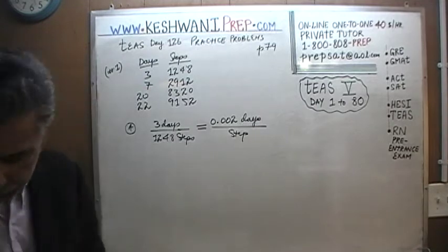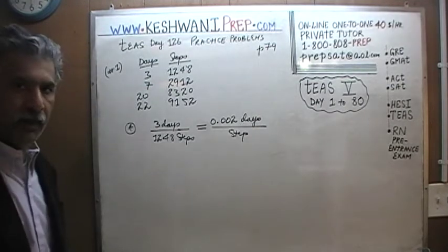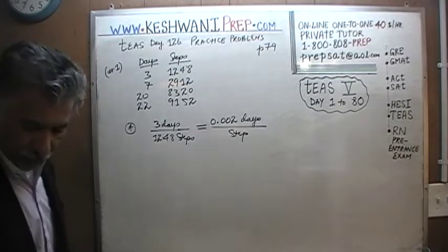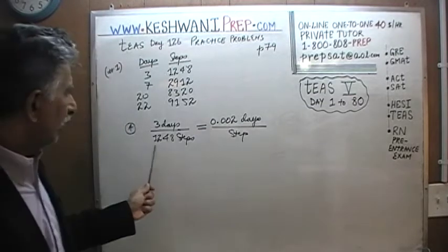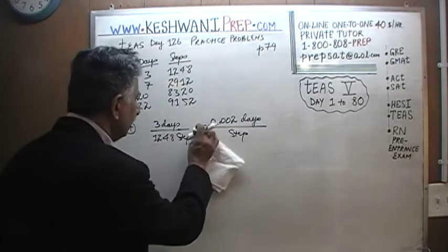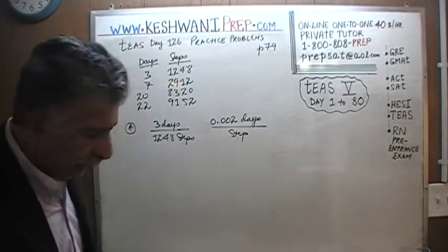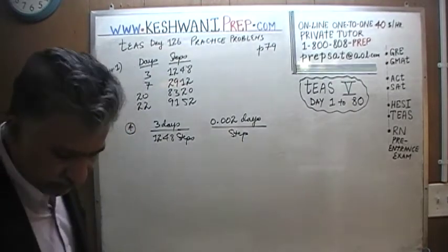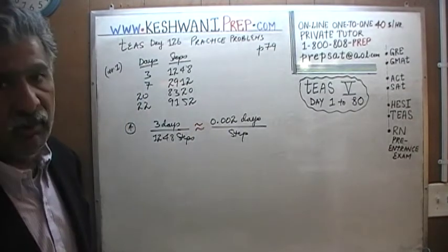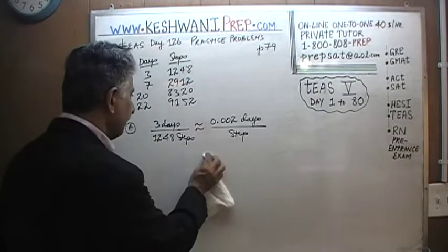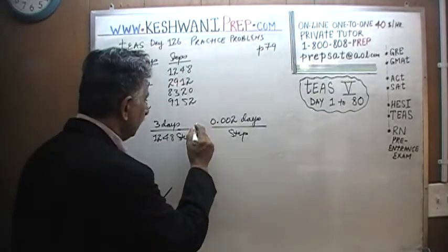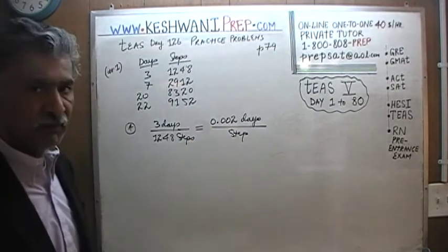So what's wrong with answer choice A? Well, there are a couple of things that are wrong with it. One is that the way it is written here, it says this quantity is equal to this quantity. Had they said approximately equal to instead of equal to, that would have been valid — but that's not what they're claiming. They're claiming that the quantity on the left-hand side is equal to this quantity. Let's see what this quantity actually works out to be.